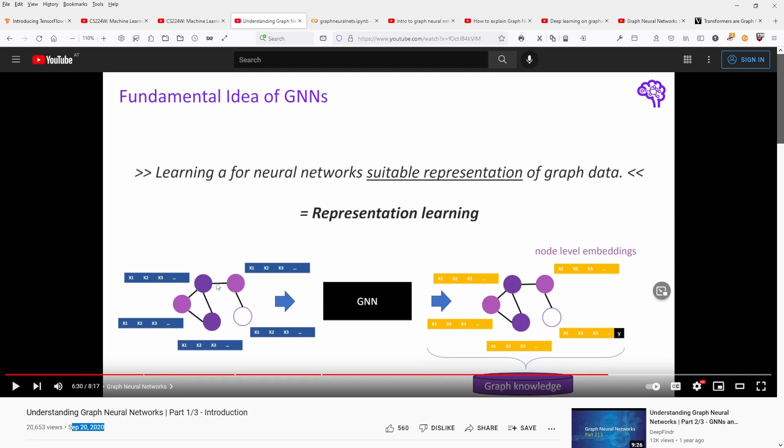Or if you want to have some node feature prediction, you can say, I don't know, he is living in this community. He is driving this car. He is friends with this and this person. So maybe he would be interested in a membership of this particular club or golf club, whatever you want. So this would be a node feature prediction.